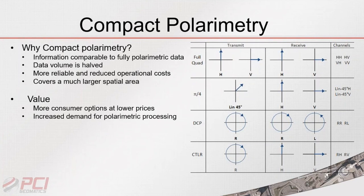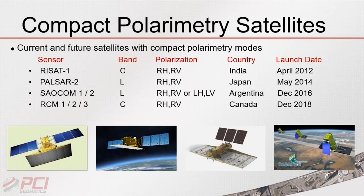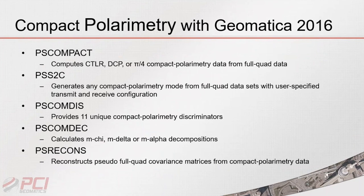Moving on to compact polarimetry: we've added a set of features for compact PALSAR imagery. For those unfamiliar, compact polarimetry is when a SAR sensor transmits one signal but receives two in return. This allows the sensor to capture a larger spatial extent, reduces operational cost compared to full quad sensors, requires less energy to transmit, extends satellite life, and has many other benefits for both industry and academia. In Geomatica 2016 we've introduced new tools to make use of compact polarimetry.